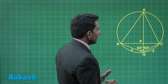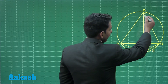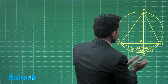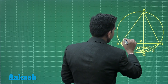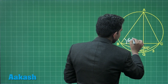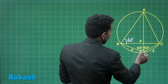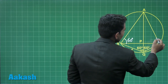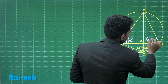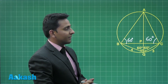First, we can see that the measure of angle APQ is equal to 60 degrees, because it is equal to the measure of angle ABC — angles in the same segment. Further, we can write the measure of angle AQB is equal to the measure of angle ACB, again by angles in the same segment.